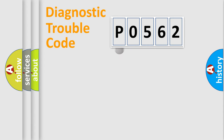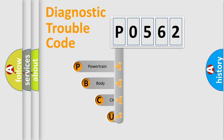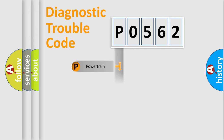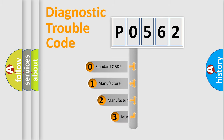First, let's look at the history of diagnostic fault code composition according to the OBD2 protocol. We divide the electric system of an automobile into four basic units: powertrain, body, chassis, and network. This distribution is defined in the first character of the code. If the second character is expressed as zero, it is a standardized error.